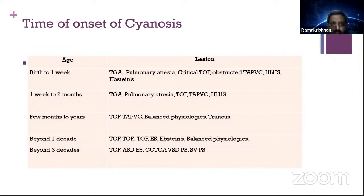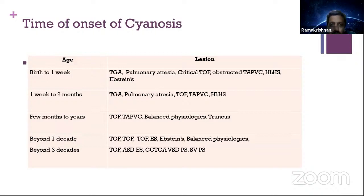What is the time of onset of cyanosis? Someone cyanotic at birth — TGA is the first possibility, then pulmonary atresia or critical tetralogy, obstructive TAPVC, HLHS, and Epstein's anomaly. From the first week to two months: TGA and pulmonary atresia remain. From a few months to a few years, everything becomes tetralogy. Beyond the first decade: tetralogy, then Eisenmenger syndrome and Epstein's. Beyond the third decade: ASD Eisenmenger's, some CCTGA, VSD-PS, and single ventricle PS are common causes of cyanosis starting around the third decade.